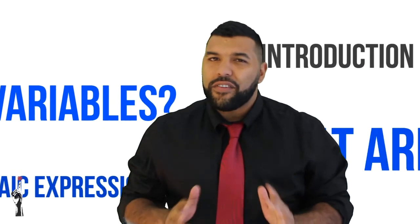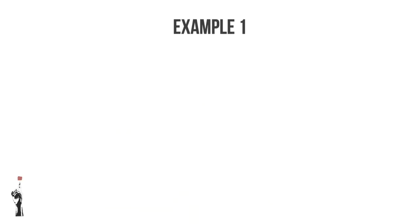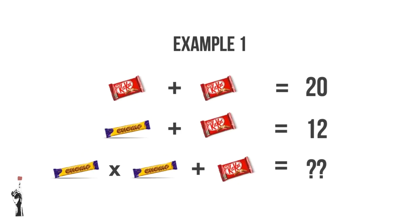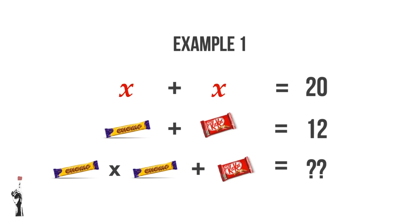Algebra is a section that everybody feels quite uncomfortable with. However, people have been doing this for quite some time without even knowing. Let's show you an example. In this example, we can see that red chocolate plus red chocolate is equal to 20. So how can we use algebra for this? Well, instead of saying red chocolate, let's replace it with the letter X.